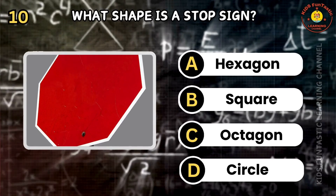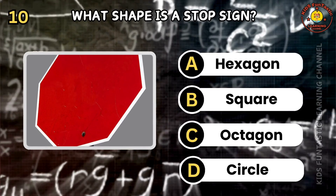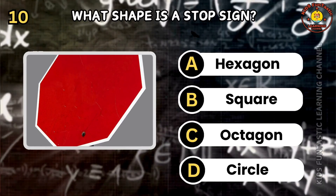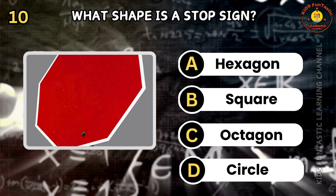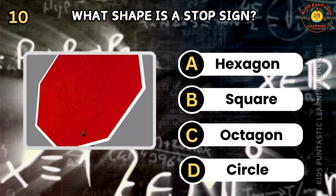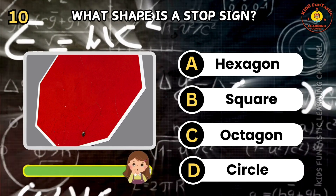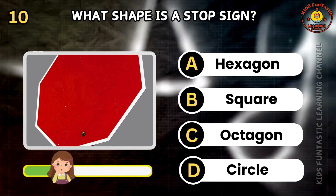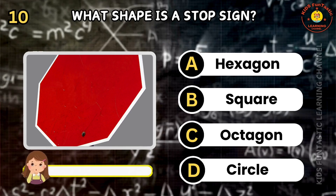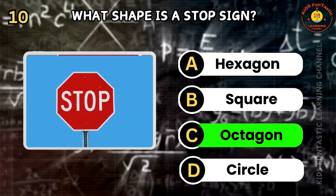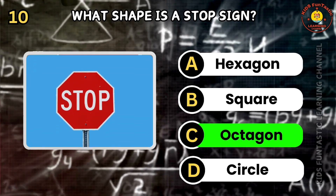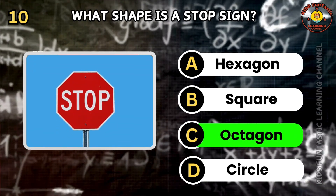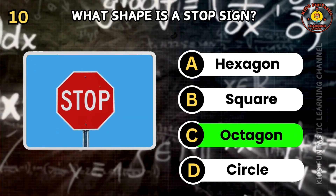Question 10. What shape is a stop sign? A: hexagon, B: square, C: octagon, D: circle. You're absolutely right! The correct answer is C. A stop sign is an octagon.